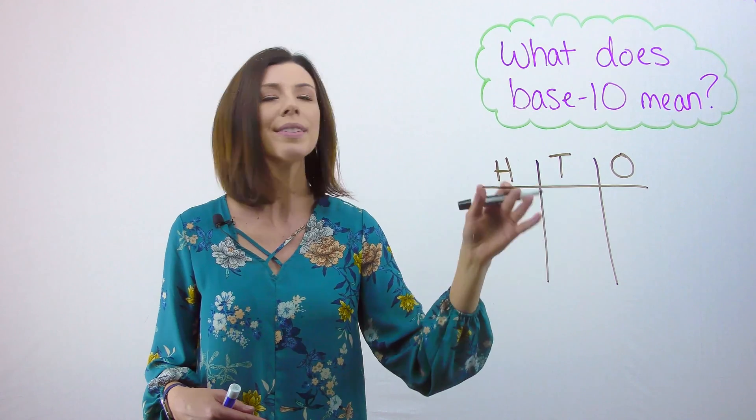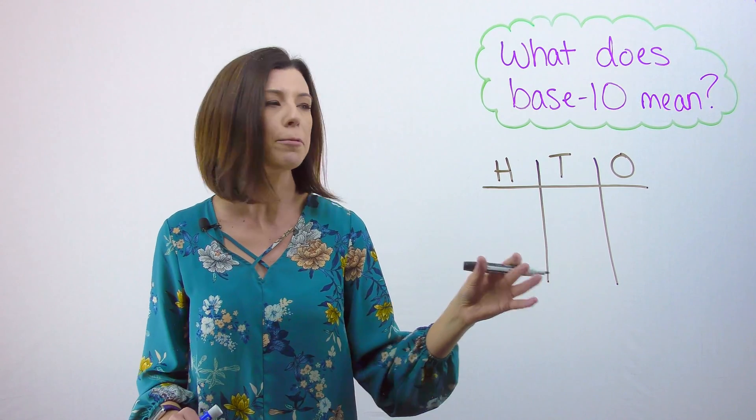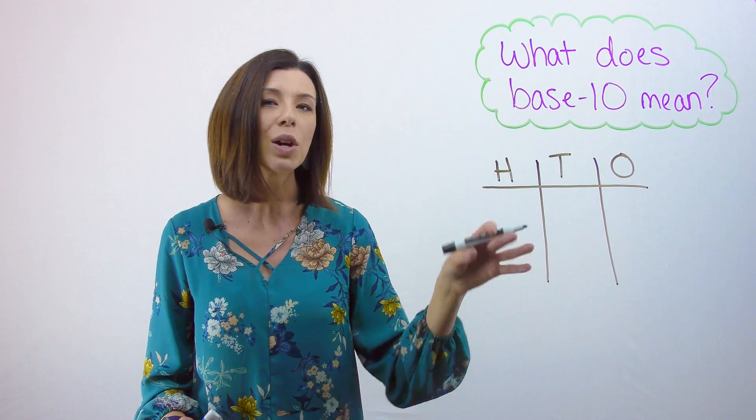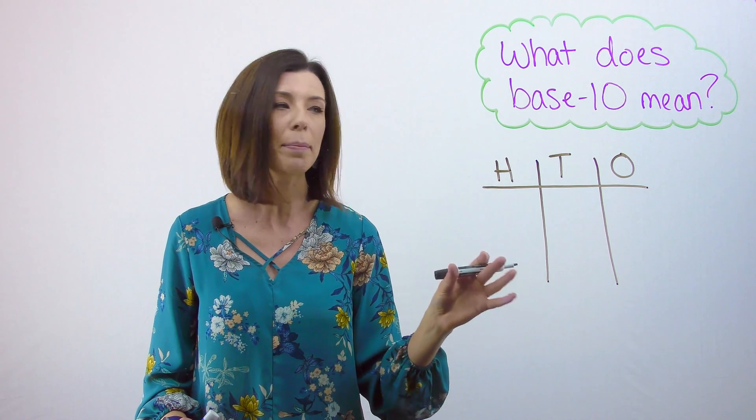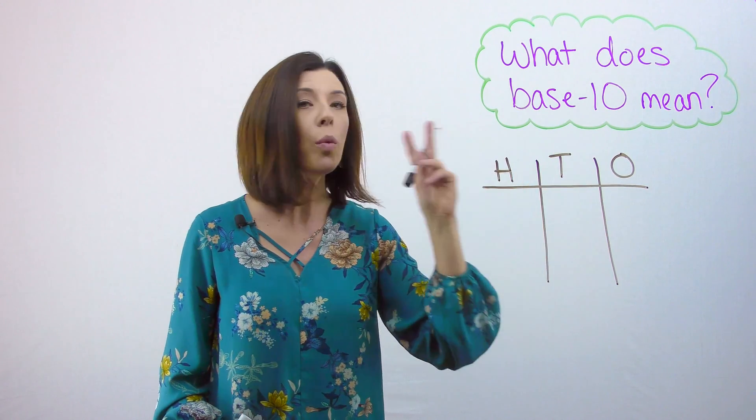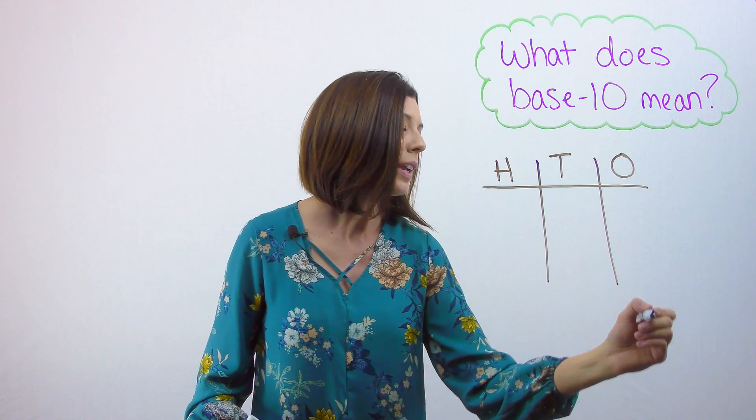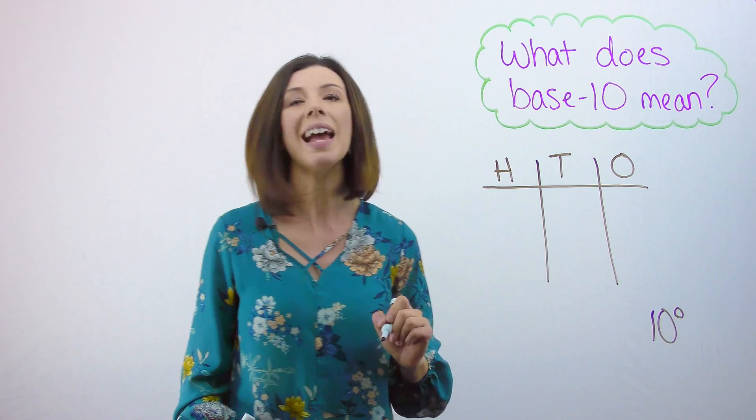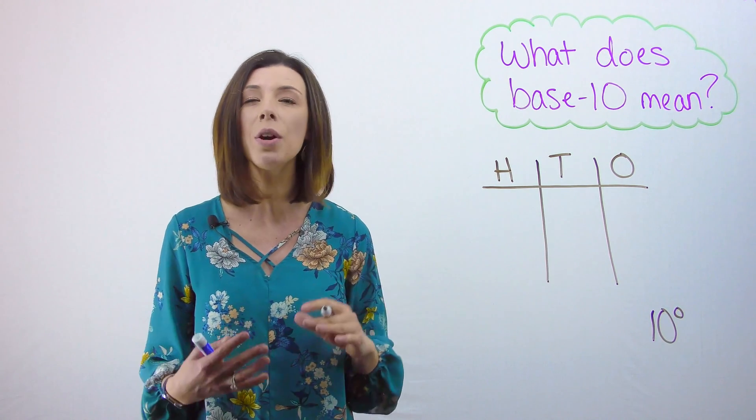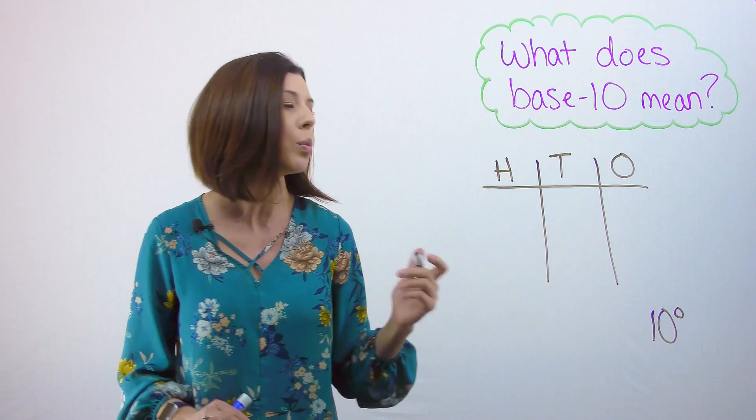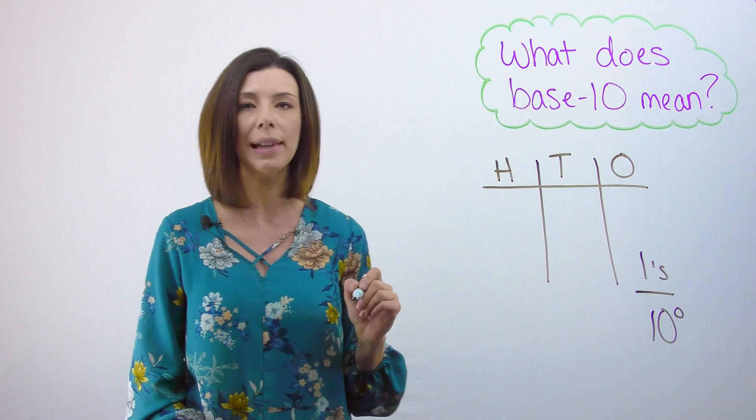Maybe you've seen a 1s, 10s, and 100s place value chart before. The math behind this though is where we look at our bases. So when I think about the 1s place, really I'm thinking about 10 to the power of zero, because we know that anything to the power of zero is 1. This is where I get my 1s place.